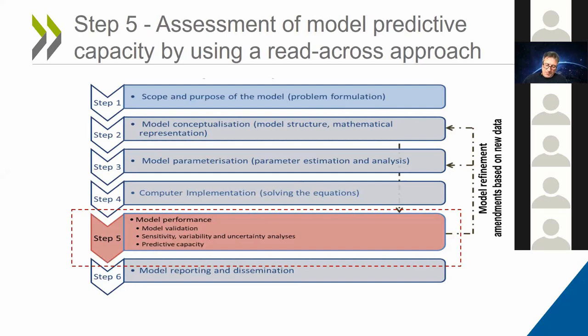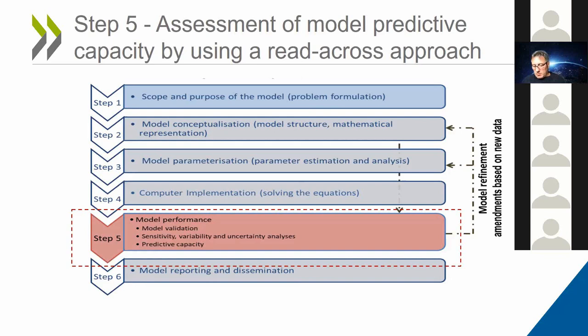Traditionally, model parameterization, calibration, and validation relied on simulation from in vivo data. However, now we are facing a change — we are developing models for data-poor chemicals, which rely more on in vitro and in silico methods, as heard from Ian, or we could use suitable analogues to fill gaps. For data-poor chemicals, we don't have in vivo data to evaluate model predictions against, so we need other lines of evidence. Marina and George presented the essential part of having a good and robust sensitivity analysis to inform model evaluation, but we also need other approaches.